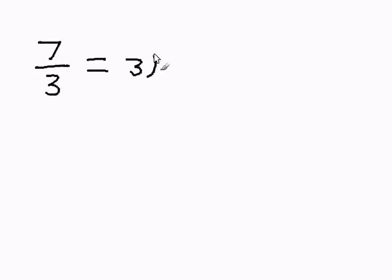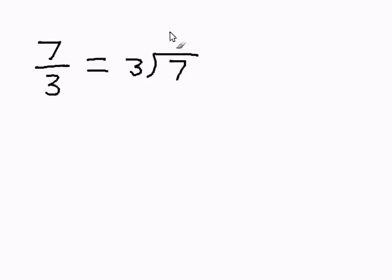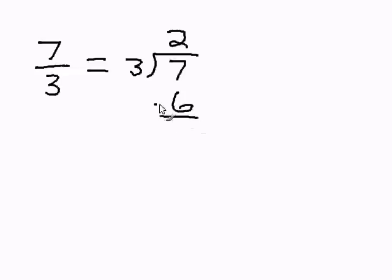3 goes into 7 two times. This will become our whole number. 3 times 2 is 6. Subtract. Our remainder is 1.